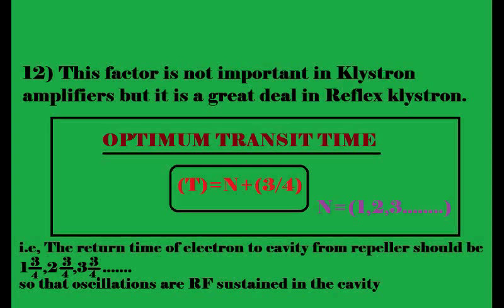The value n + 3/4 represents the bunching time: the value 1 represents one full cycle of the electron traveling from cathode to repeller and back to the cavity gap, while 3/4 represents three-quarters of one cycle. This is the optimum transit time required to obtain a high-energy bunch, sustaining the high-frequency microwave oscillations in the reflex klystron oscillator.